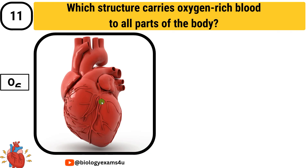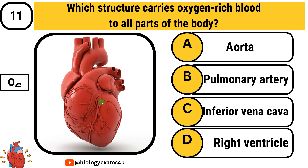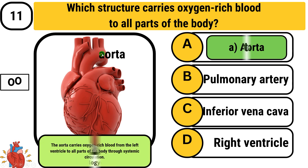Question number 11: Which structure carries oxygen-rich blood to all parts of the body? Option A: aorta. Option B: pulmonary artery. Option C: inferior vena cava. Option D: right ventricle. The answer is aorta. The aorta carries oxygen-rich blood from the left ventricle and circulates it to all parts of the body through systemic circulation.